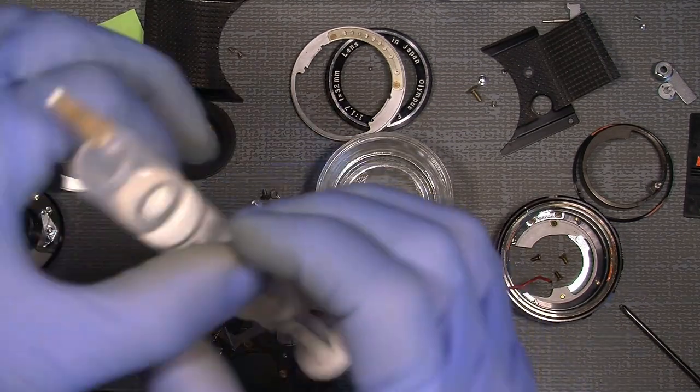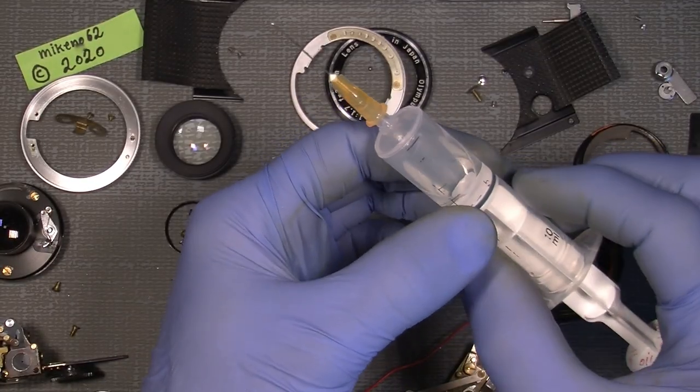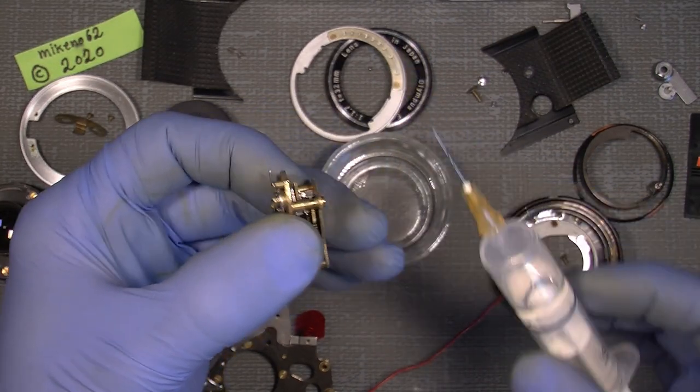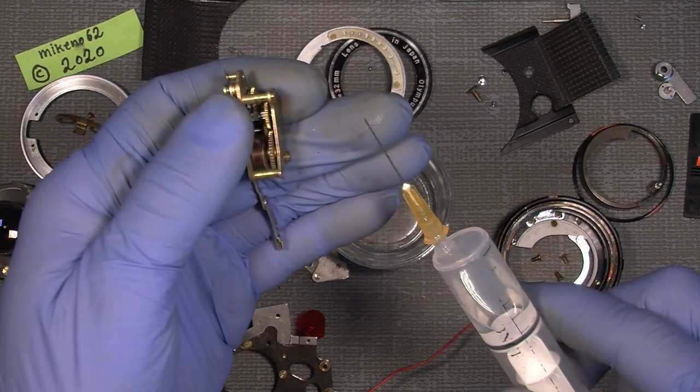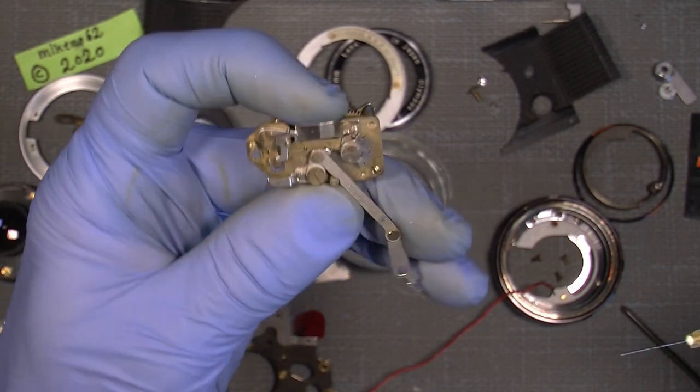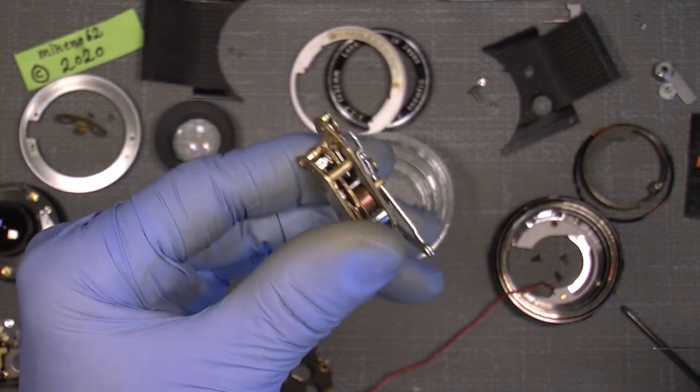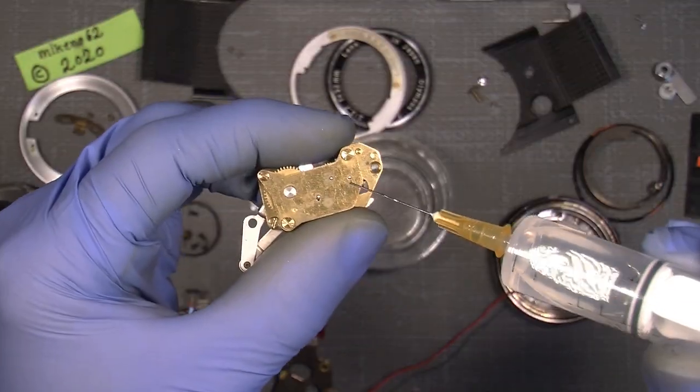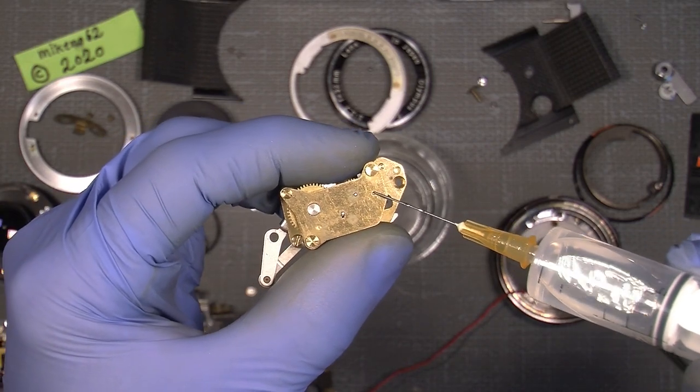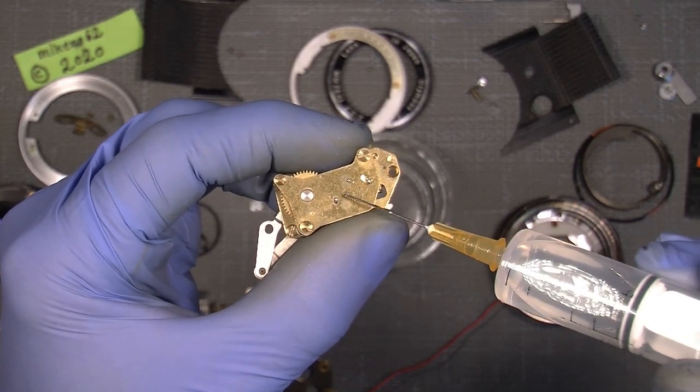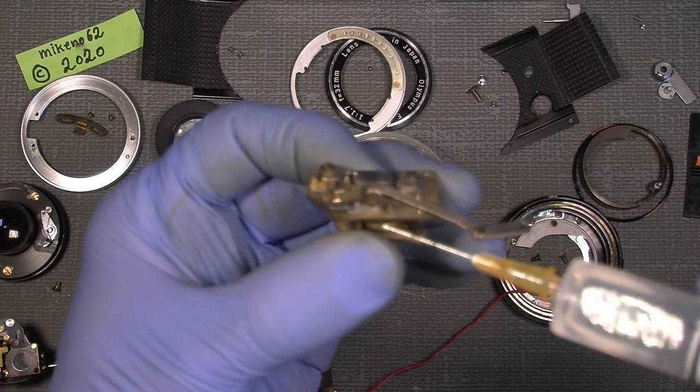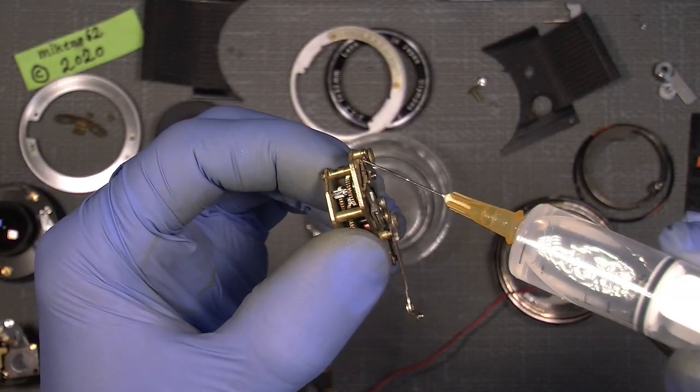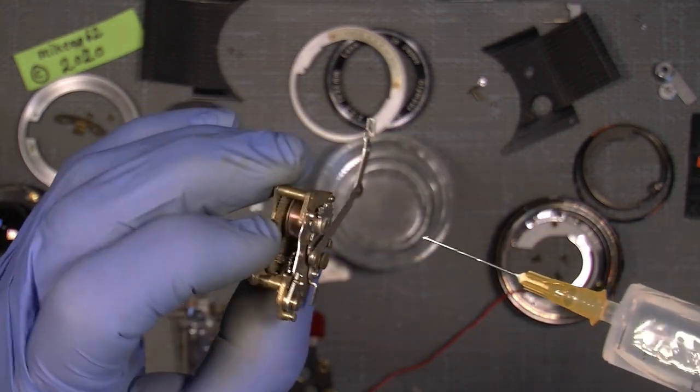And for that I will use super fine and very thin sewing machine oil, acid free. And it's very thin. And a syringe needle also. So just give it a very light oil. It doesn't have to be more than a little drop.